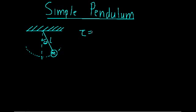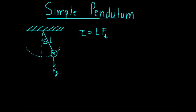Just a brief refresh: a torque is going to be given by the distance from the axis of rotation to our force — let's just say L for now — times the tangential component of our force. So in order to find out what the torques are in the system, we first have to understand what forces are in play for this pendulum. The only force we're really going to be concerned about right now is gravity, which is going to be going down. If we want to find the torque, we're going to need to find the relevant component of gravity that's helping this mass move along the circular track.